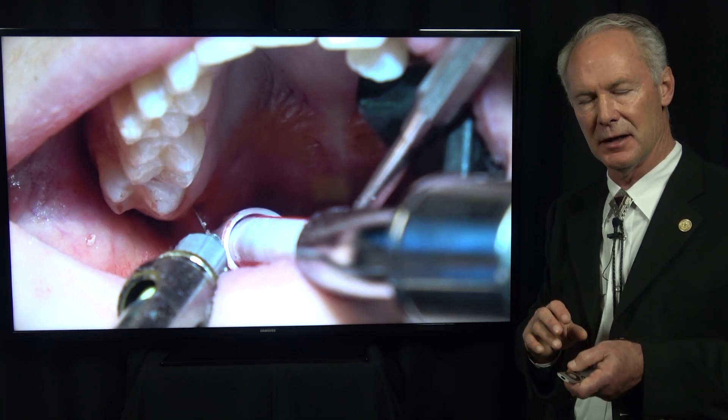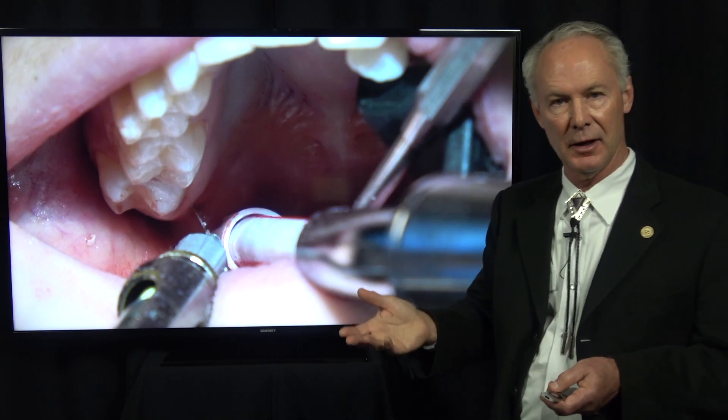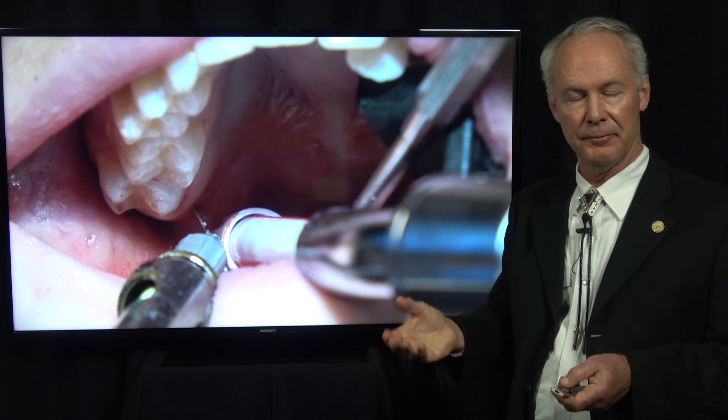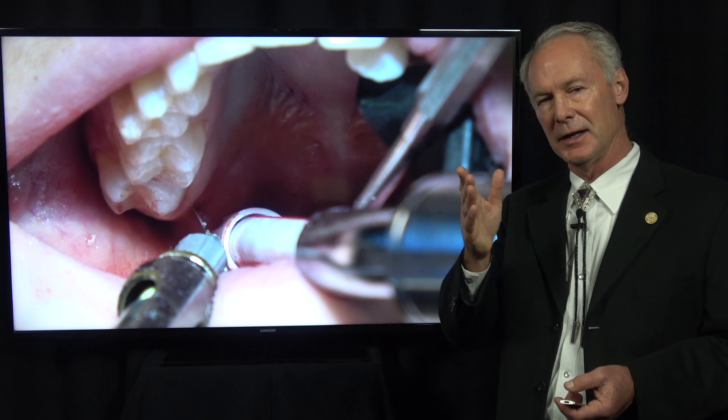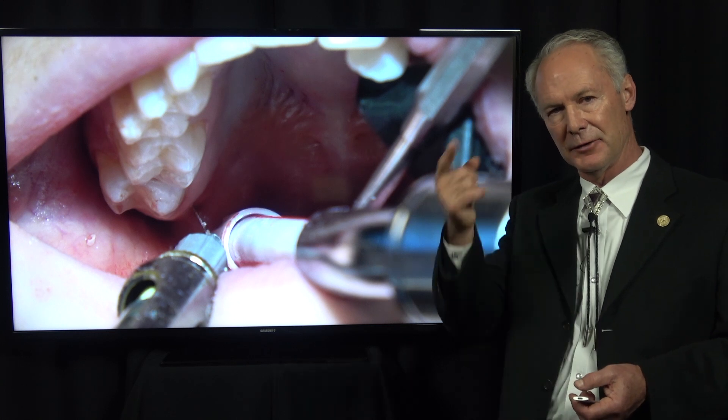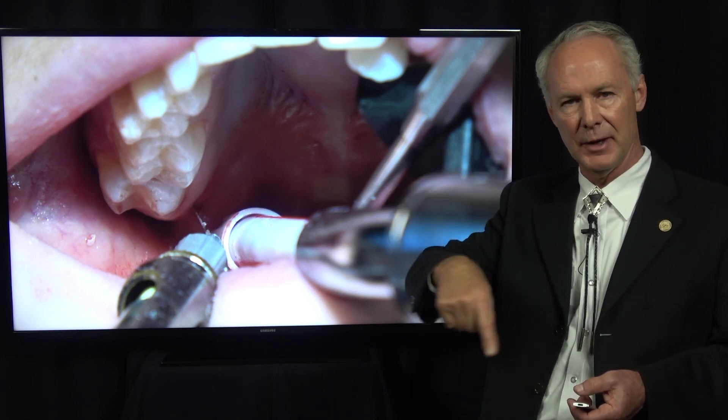You're suturing that resorbable gauze in the socket, which creates a matrix for the blood and organizes that clot. A dry socket comes from loss of the clot in the socket — the nerve endings are exposed in the bone, no longer insulated by the clot, and that's what causes pain. It takes seven days for those nerve endings to reform in the socket, so we want to keep the clot in the socket for seven days.